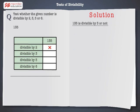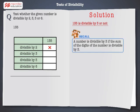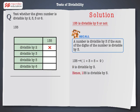Next, check whether the number 135 is divisible by 3 or not. Let's recall that a number is divisible by 3 if the sum of the digits of the number is divisible by 3. The sum of the digits, that is, 1 plus 3 plus 5 is equal to 9, and 9 is divisible by 3. Hence, 135 is divisible by 3.